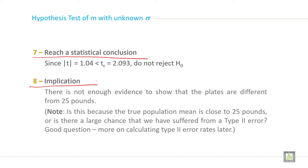Note: Is this because the true population mean is close to 25 pounds, or is there a large chance that we have suffered from a Type 2 error? Good question. More on calculating Type 2 error rates later.